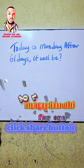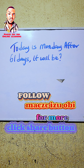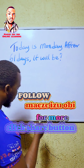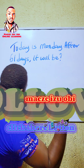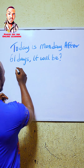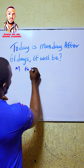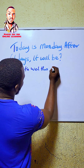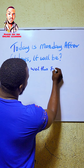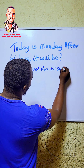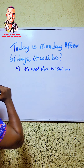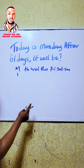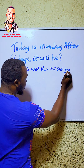Today is Monday. After 61 days, it will be your question mark. The only thing I need here is: Monday, Tuesday, Wednesday, Thursday, Friday, Saturday, and Sunday. Now, Monday is 1, Sunday is 7.